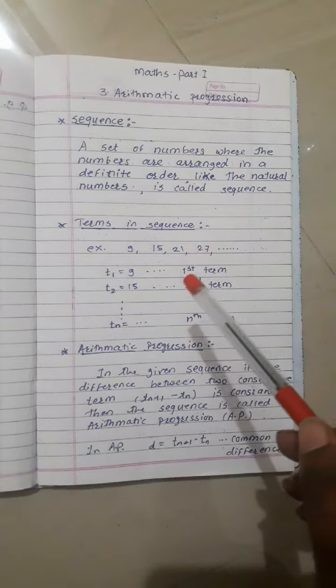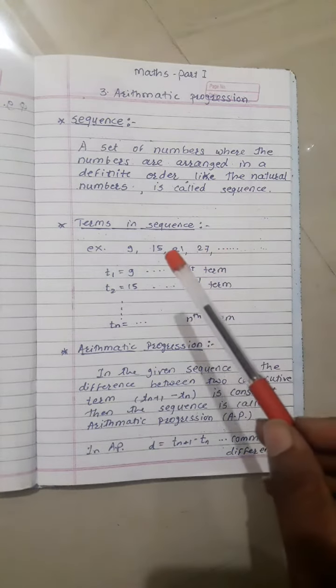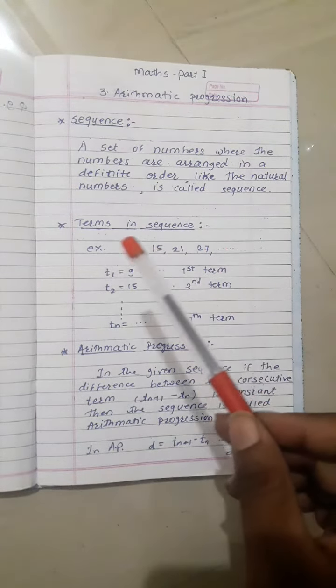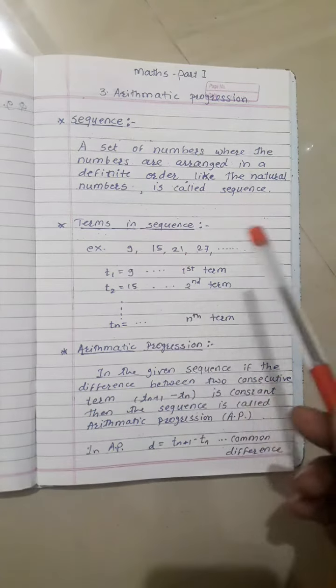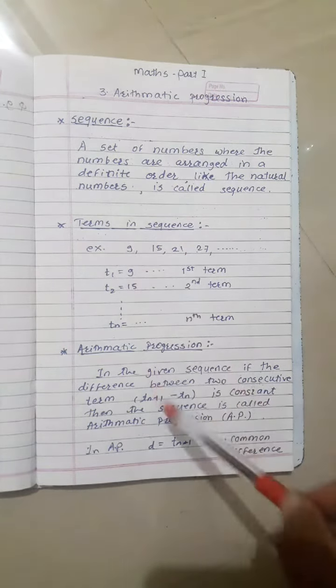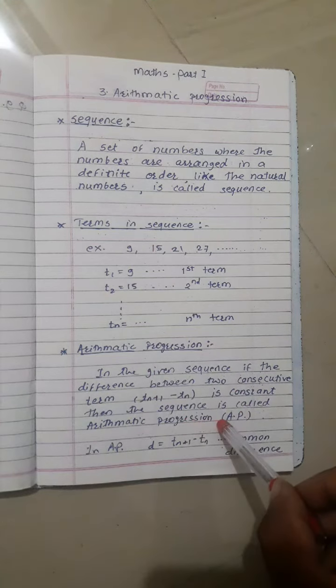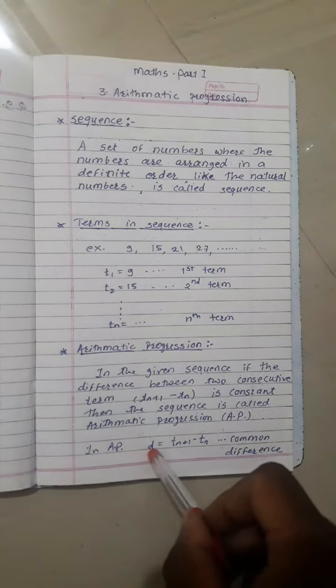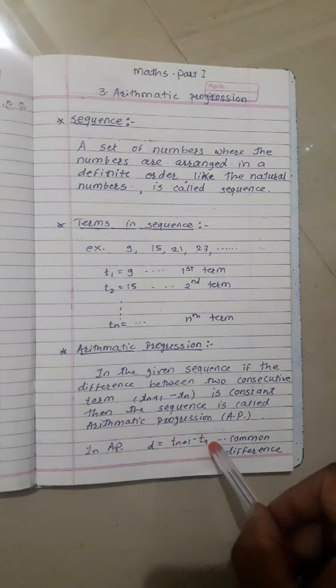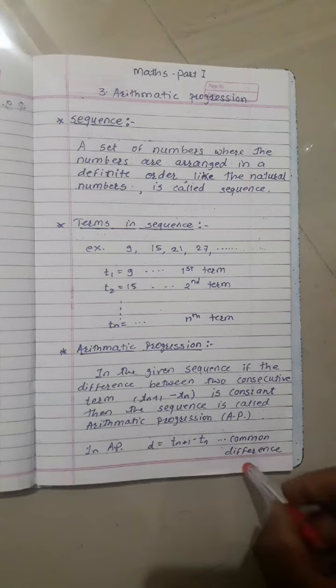tn+1 is the next term and tn is the nth term. If the difference is constant, then it is Arithmetic Progression. The formula is d = tn+1 - tn, where d is called the common difference.